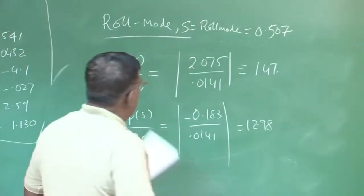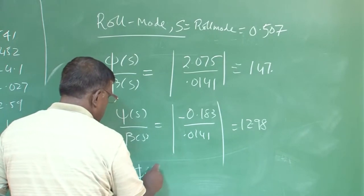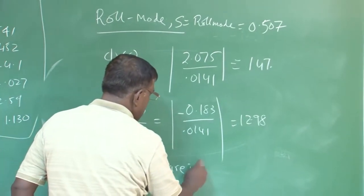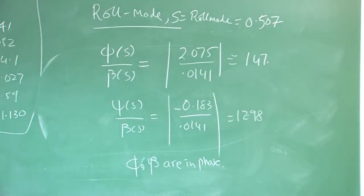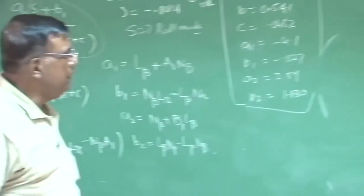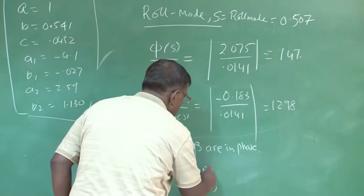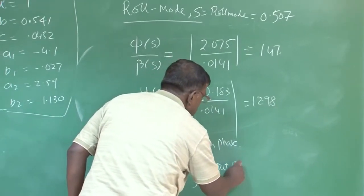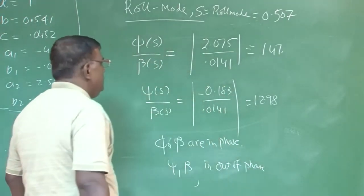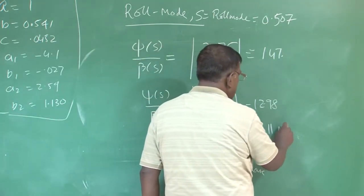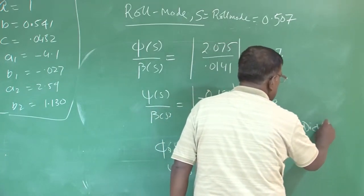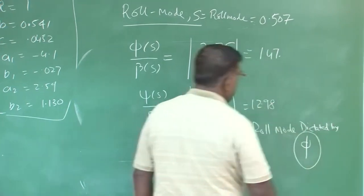Again here, phi and beta are in phase. And once again, beta domination is less compared to phi — which is roll mode, right, highly damped. For psi and beta, you find they are out of phase — the phase angle is 180 degrees because of the minus sign. So what should the designer infer? The roll mode is predominantly dictated by phi, and that we already know.